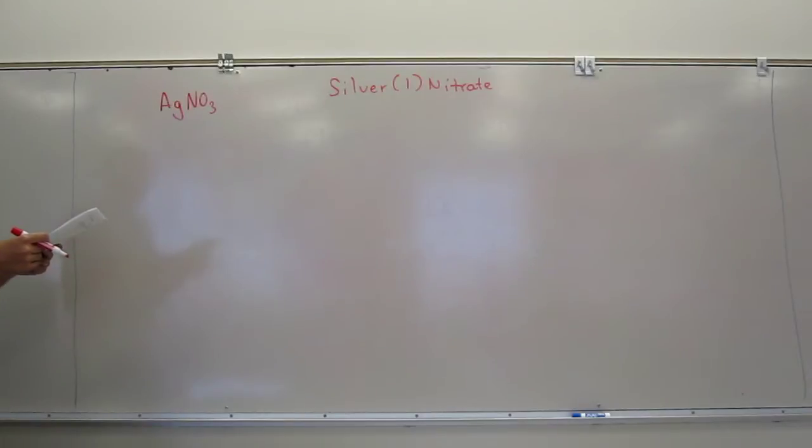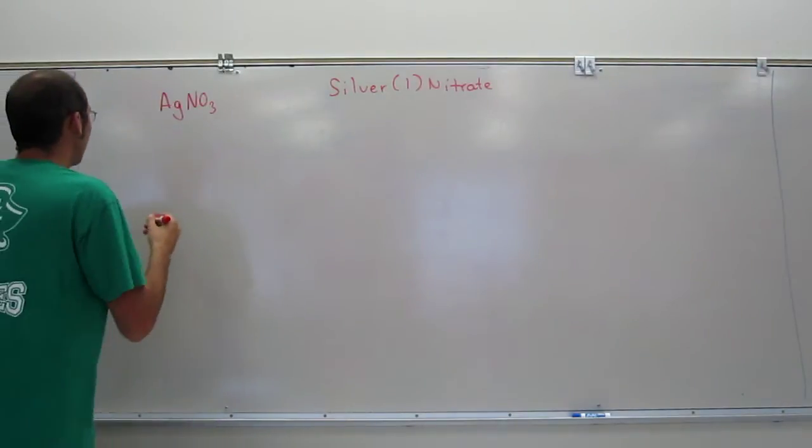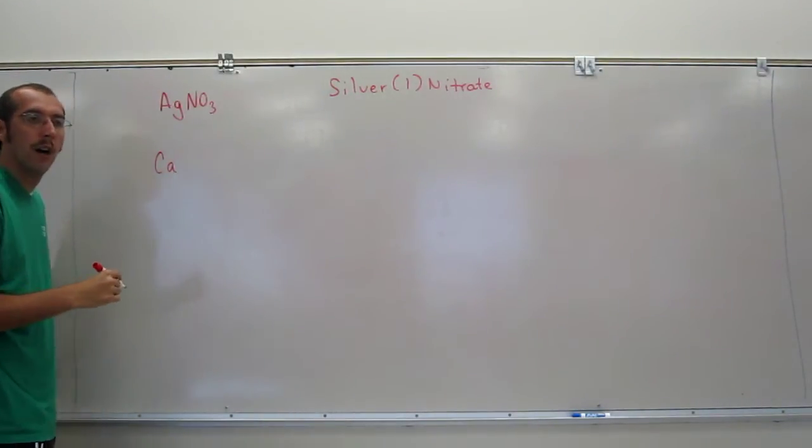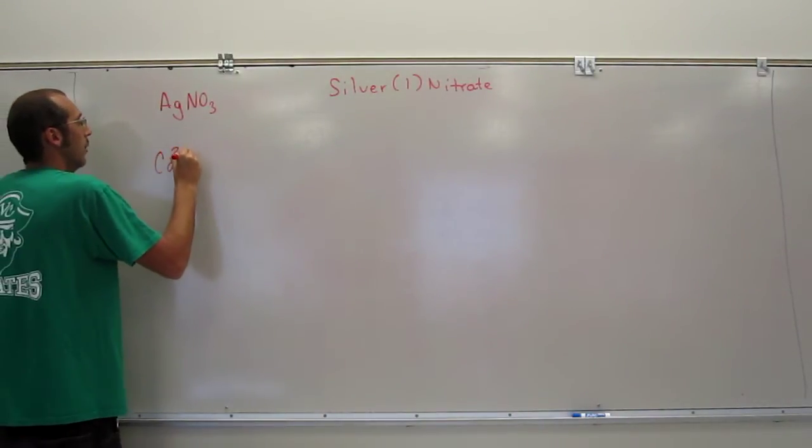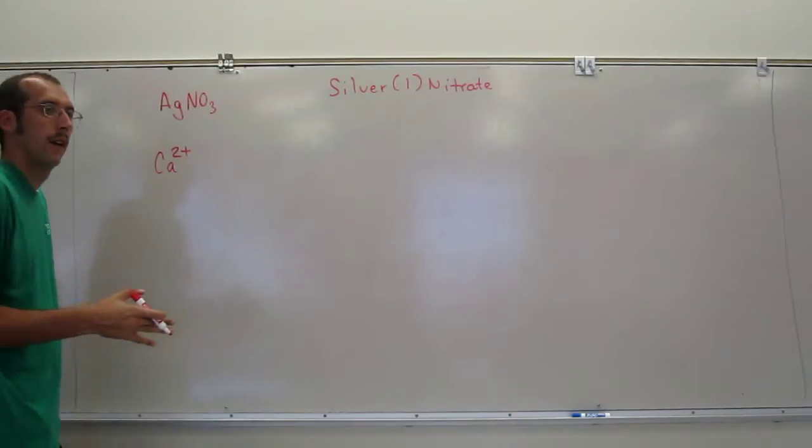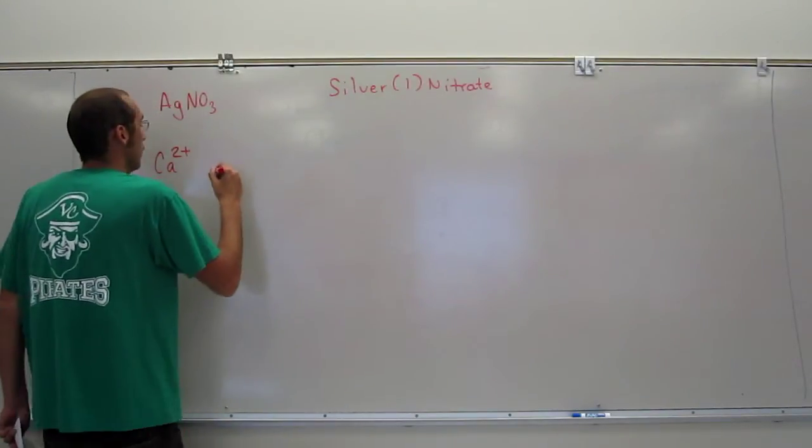Together with an aqueous solution of calcium bromide. So calcium bromide, you know calcium, it's got always going to have that same charge, right? And if you look on the periodic table, it's plus 2. So you know bromine always has the same charge too, and what is that? It's a halogen, so minus 1, right?